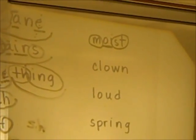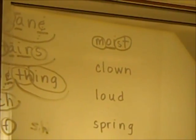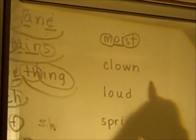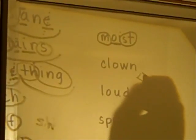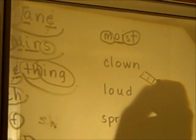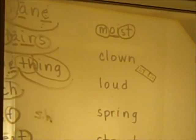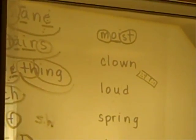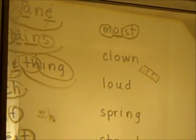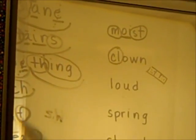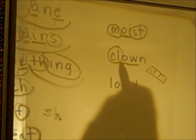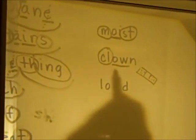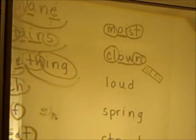Here's our next two words. These words are our Band-Aid words. Why do we call them Band-Aid words? They say ow. O-W or O-U. Here's our Band-Aid: O-W or O-U say ow. So circle C-L — that's the beginning blend — and underline O-W, ow, and circle N. Clown. CL-OW-N.